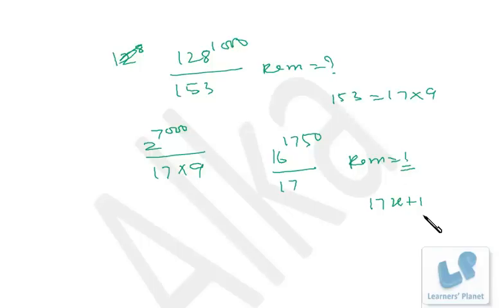So 2 raised to 7000 can be written as 2 raised to 6999, then 2. I am converting or taking the multiple of 3 separately. Now 6999 is a multiple of 3, so instead of this I can write 8 raised to 2333.